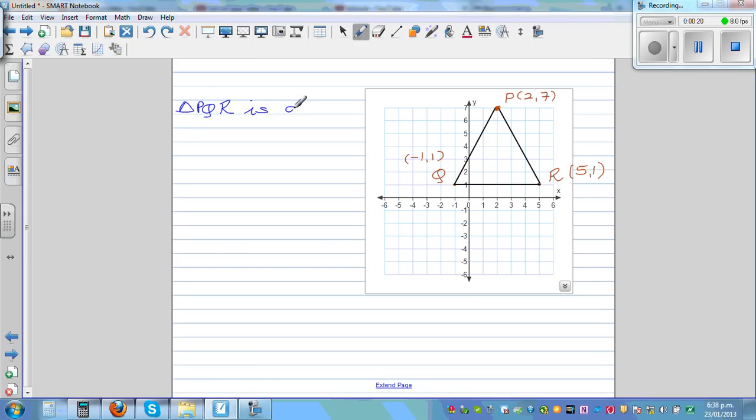Now what is an isosceles triangle? An isosceles triangle means two sides are equal. Any two sides, if they are equal, we can see it is an isosceles triangle.